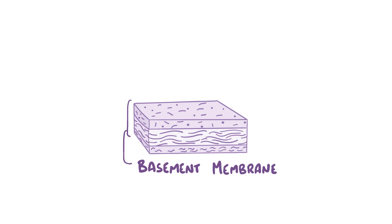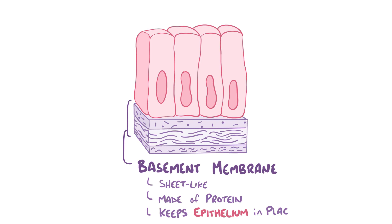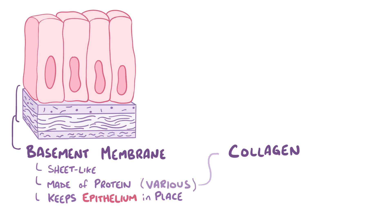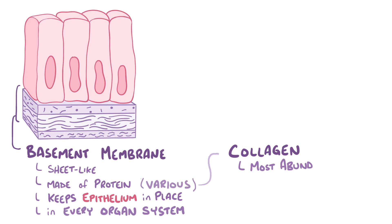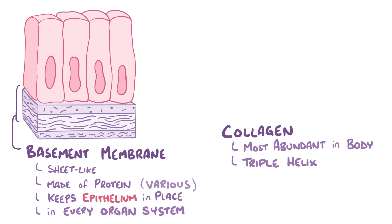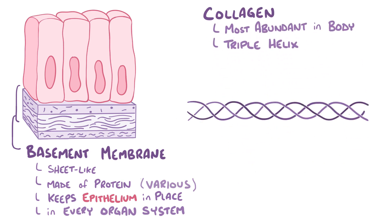To understand Goodpasture syndrome, let's start by thinking about the basement membrane, which is a thin, sheet-like layer of tissue made of protein that keeps the epithelium stuck firmly to the actual organ — kind of like double-sided tape which keeps wrapping paper stuck to the gift. This basement membrane is made up of various proteins, but the major one is collagen. Since basement membrane exists throughout every organ system, it's no wonder that collagen is the most abundant protein in the human body. Collagen is a pretty striking molecule with a triple helix structure composed of three separate chains that are intertwined like braided hair.